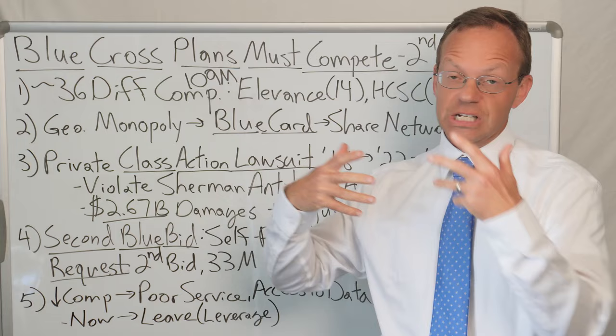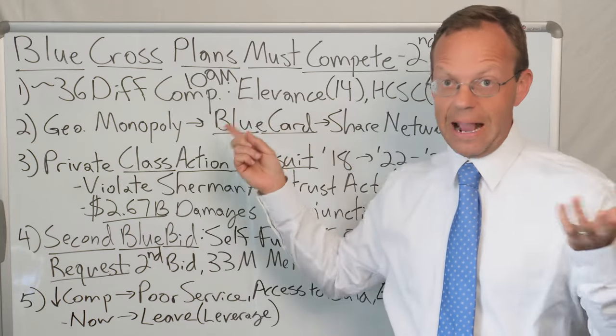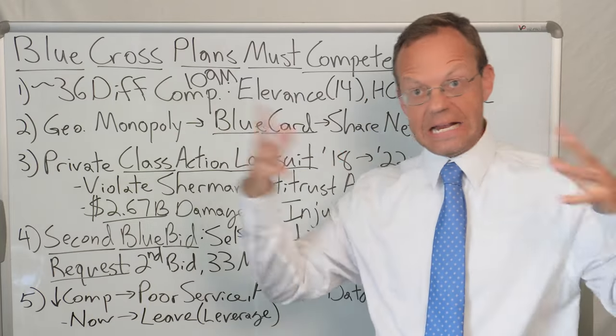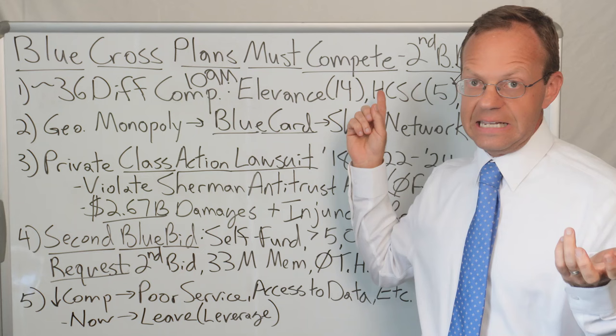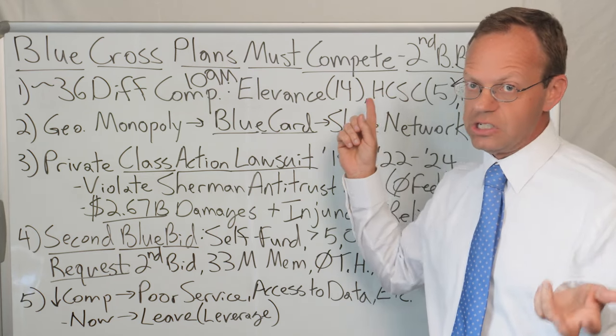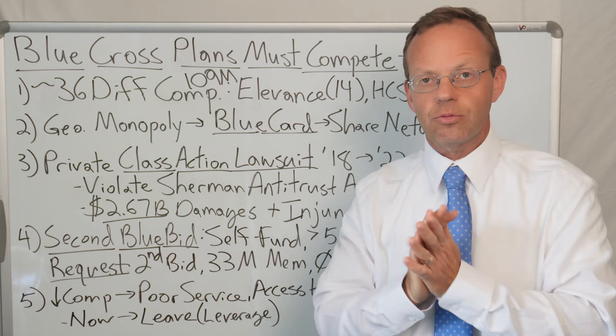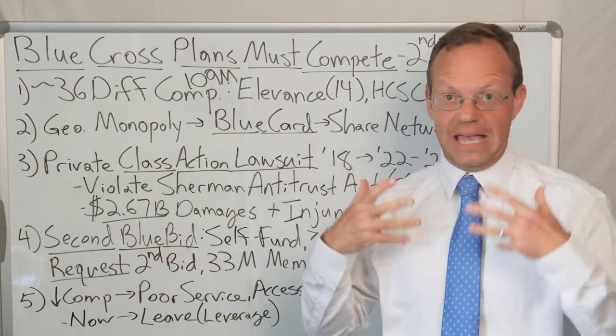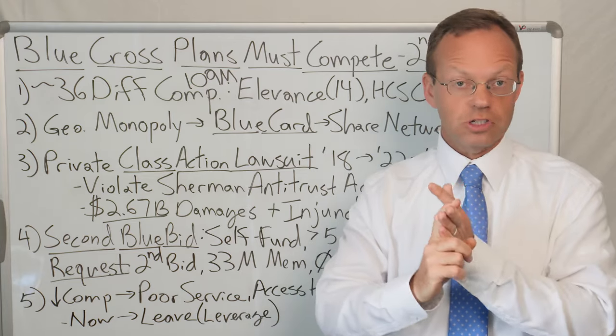They range from the largest publicly traded Blue Cross plan, which is Elevance or Anthem as they used to be called. There are 14 different state Blue Cross plans that make up Anthem. There's also HCSC, Healthcare Services Corporation, which is five state Blue Cross plans: Illinois, Texas, and three other states. There's also Blue Cross plans that have the actual name of the state, like Blue Cross of Alabama, Blue Cross of South Carolina, Blue Cross of North Carolina.